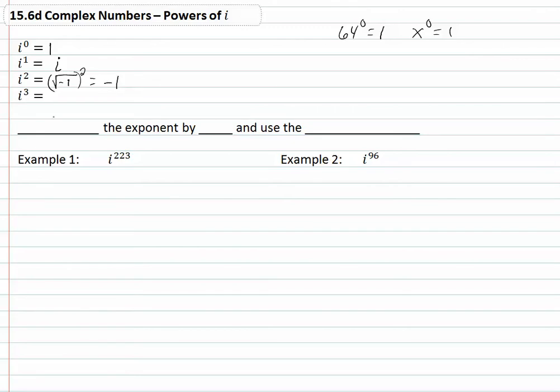We have i to the third power. Well if we have the square root of negative one squared times the square root of negative one, which would give us the square root of negative one cubed, well we know that the square root of negative one squared is going to be negative one. The square root of negative one is i, so that means that this is going to be negative i. Because we have negative one times the square root of negative one is i, so we get negative i.